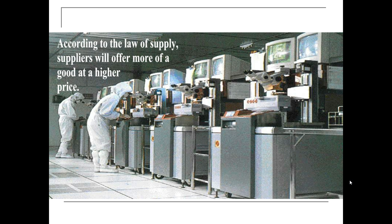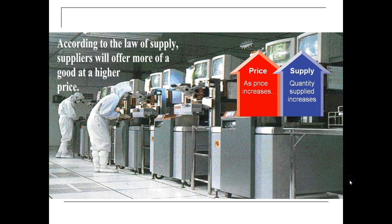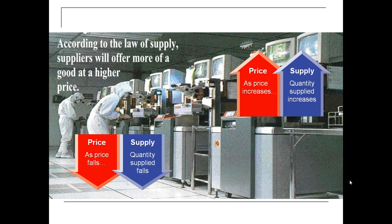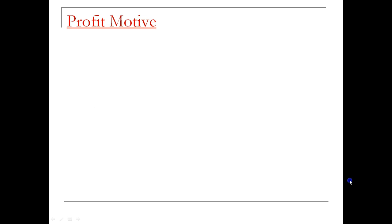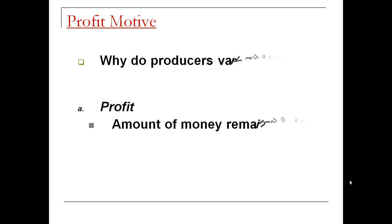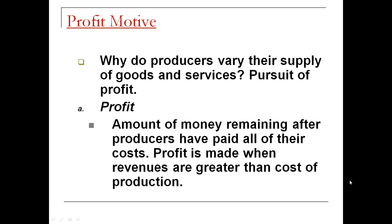According to the law of supply, suppliers will offer more of a good at a higher price — as price increases, quantity supplied increases; as price falls, quantity supplied falls. So why do producers vary the supply of goods and services? They do this to achieve a profit. Profit is the amount of money remaining after producers have paid all their costs.